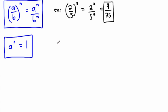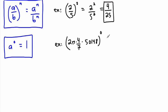So we can have some crazy-looking example. Let's say 2 times pi times 4 over 7 times 50,148, and all of that raised to the power of 0. Well, that's easy — anything to the power of 0 is 1. That's a really nice rule.